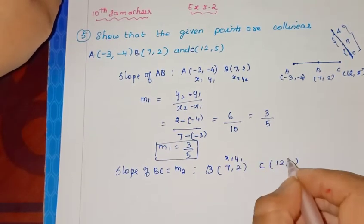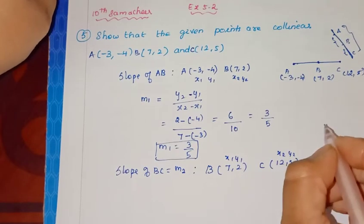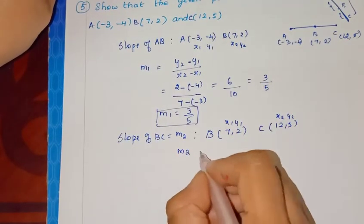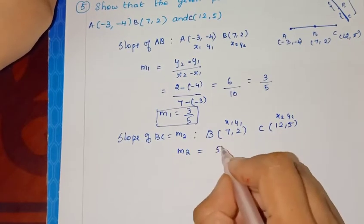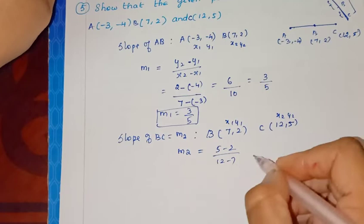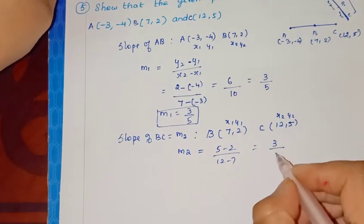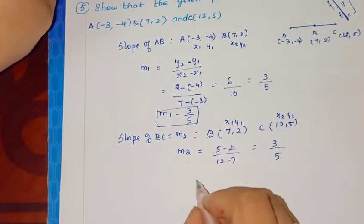Slope of BC, m2: using formula y2 minus y1, 5 minus 2, by 12 minus 7. That's 3 by 5. So m2 equals 3 by 5.